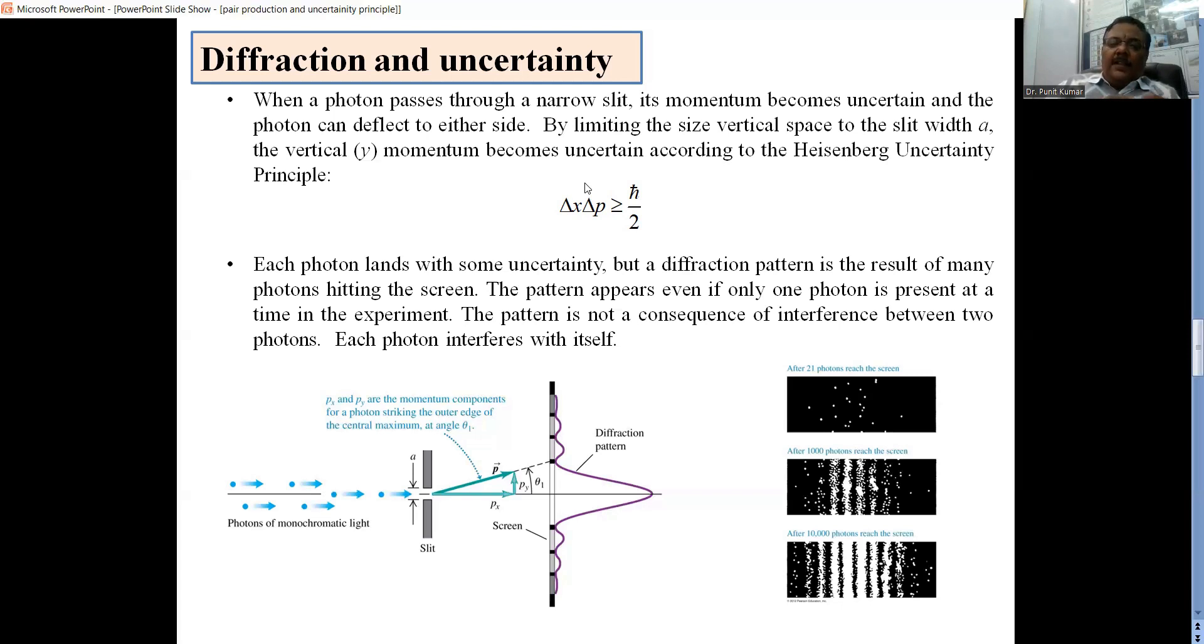If each photon lands with some uncertainty, we know that the diffraction pattern is a result of many photons hitting the screen. If we are talking in terms of uncertainties, then how will the diffraction take place when everything is uncertain? Diffraction takes place when a single photon is present in a beam at the time of an experiment.